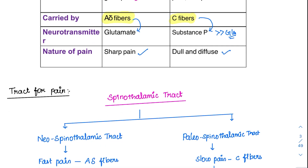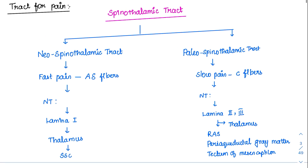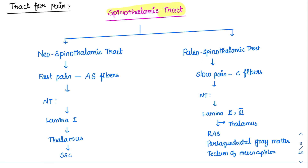Coming to the tracts involved in pain — the tract predominantly involved is the spinothalamic tract, which we will also see in the ascending tracts. The spinothalamic tract consists of two pathways: the neospinothalamic tract and the paleospinothalamic tract.